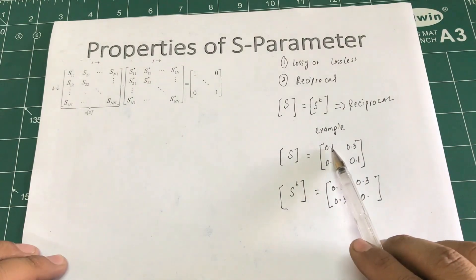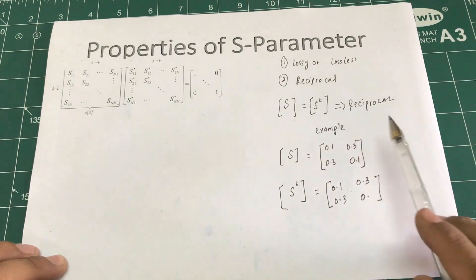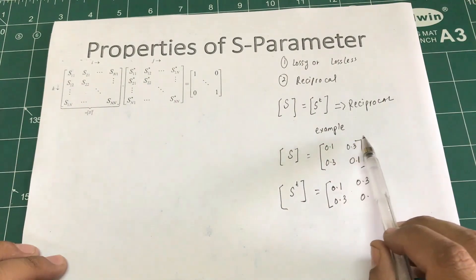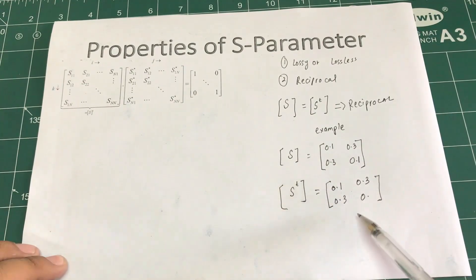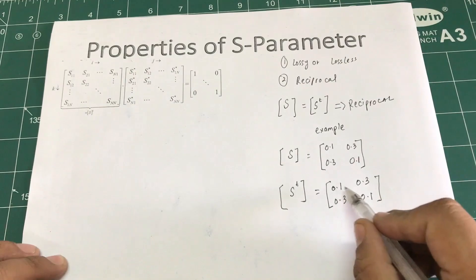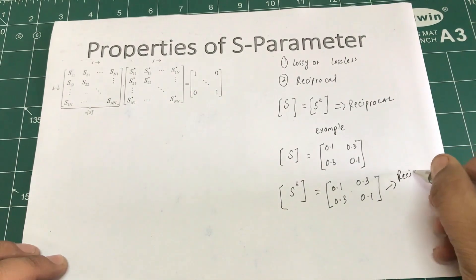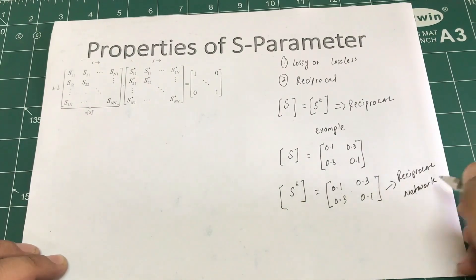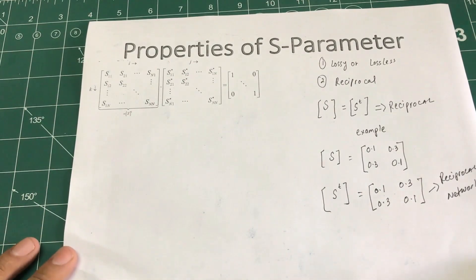So this was my S-parameter: 0.1, 0.3 / 0.3, 0.1. When I take the transpose, I write each row in terms of a column. If they are exactly the same, I can conclude the network is reciprocal.